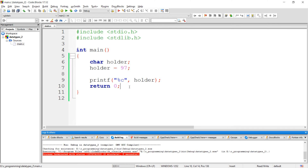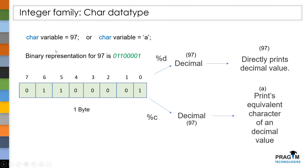So what's happening here? Why are we getting two different values when we use %c and %d? If you notice, we have two different statements, but the meaning of these two statements is almost the same. For both statements, 97 will get stored in this variable, and the binary representation of 97 is 01100001. This is how it will get stored in computer memory.